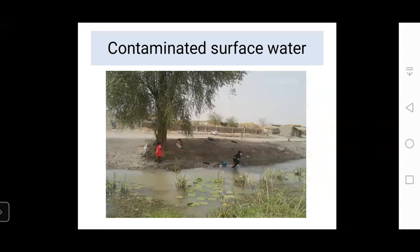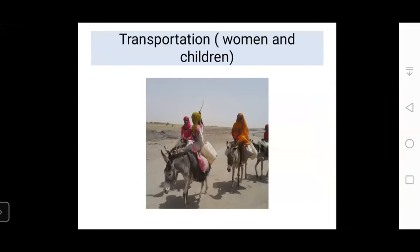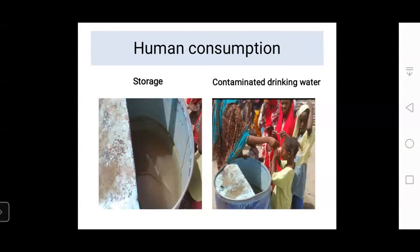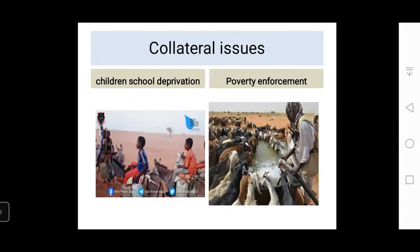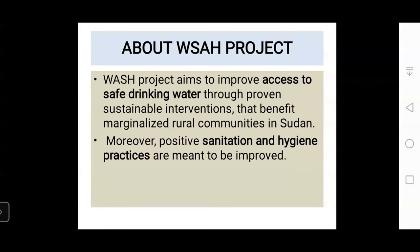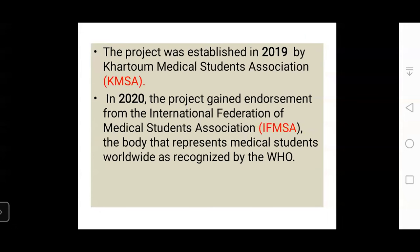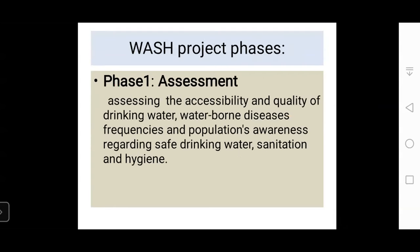This picture shows one of the villages we are working in — this contaminated surface water is the only source of drinking water and domestic use. They transport this water using the effort of women and children, then store it in metal barrels, which are also contaminated, and they drink it directly as it is. The collateral damage of WASH aspects exceeds the health burden to children's school deprivation because they fetch water from very far distances, and poverty enforcement as well. Our project WASH was built to tackle this issue and has been endorsed under IFMSA — the International Federation of Medical Students' Associations.